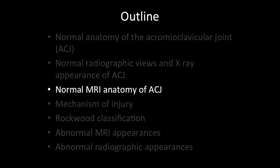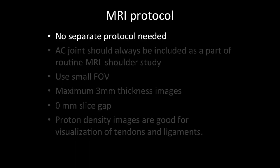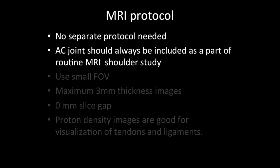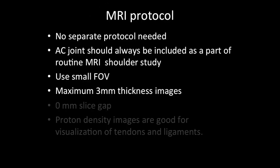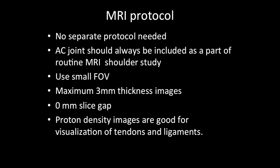For MRI protocol, you do not need a separate protocol for the AC joint — it should always be included as part of the routine MRI shoulder study. Use a small FOV; don't scan to the distal humerus, as the AC joint will appear miniature. The FOV should cover the shoulder joint and tendons nicely as well as the acromioclavicular joint. Use maximum 3 mm thickness images with zero millimeter slice gap, and proton density images are good for visualization of tendons and ligaments.